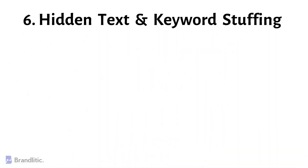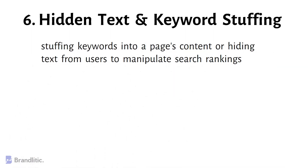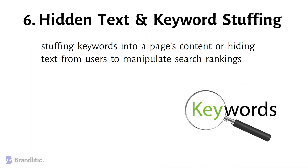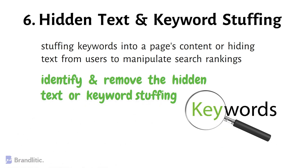Hidden Text and Keyword Stuffing refers to tactics that involve stuffing keywords into your page's content or hiding text from users to manipulate search rankings. To fix this penalty, you need to identify and remove the hidden text or keyword stuffing and make sure to follow Google's guidelines when optimizing your site.